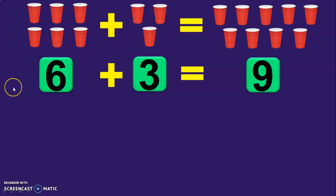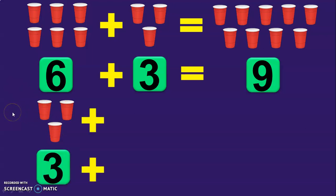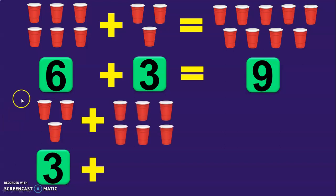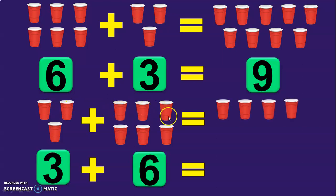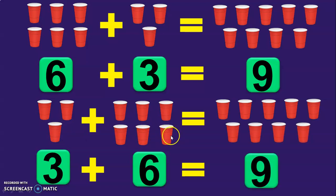Let us do it the other way now. Suppose you had 3 tumblers with you — 1, 2, and 3 — and your friend brings in 6 more tumblers: 1, 2, 3, 4, 5, 6. What is the total number of tumblers now? Let us count: 1, 2, 3, 4, 5, 6, 7, 8, and 9. The answer in this case also is 9. So 6 plus 3 is equal to 9, and 3 plus 6 is equal to 9. This is our first property of addition: two numbers can be added in any order; the sum, the total, or the answer will always be the same.